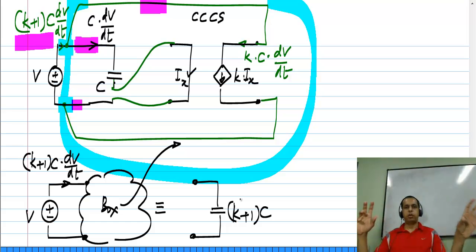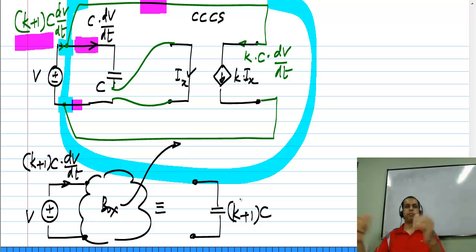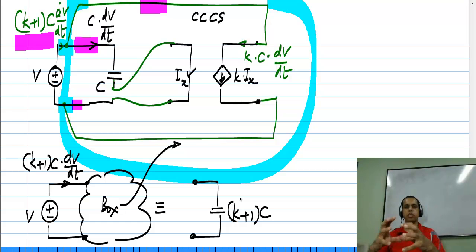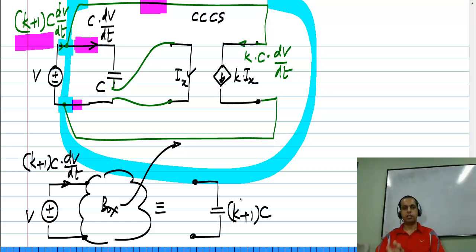You could have a box with very complicated circuitry, but across the terminals you measure voltage and current and come up with a relationship V equals I times something. You know that relationship belongs to a resistor. So the entire complicated circuit within the box cannot be distinguished from another box which consists of a single resistor of that value — without opening the box you cannot tell what is inside. As far as the terminal characteristics are concerned it is just a resistor. Similarly, in this particular case as far as the terminal characteristics are concerned it is just a capacitor.